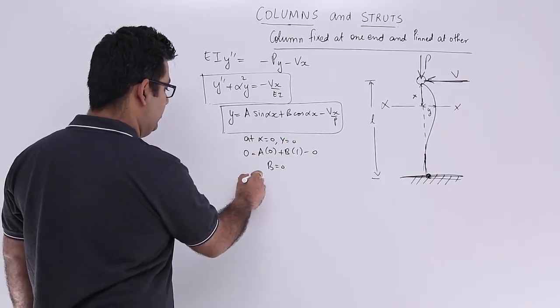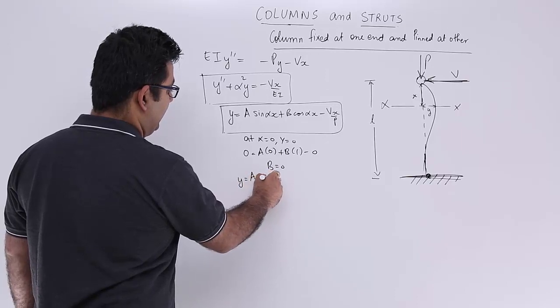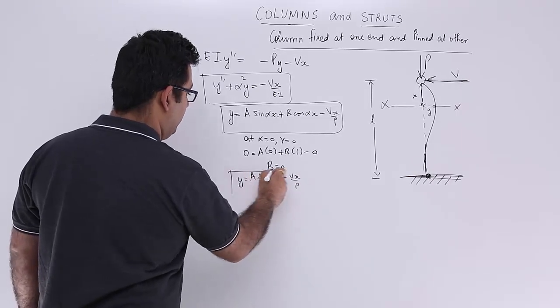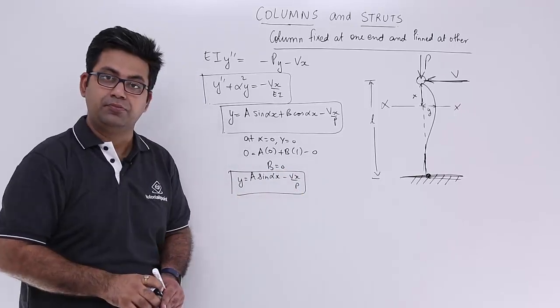Okay, so I will have y is equal to a sin alpha x minus vx upon p.